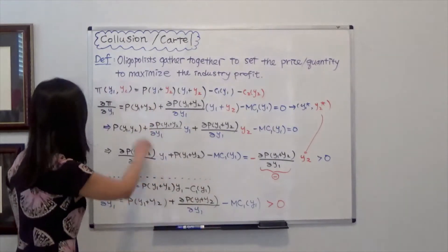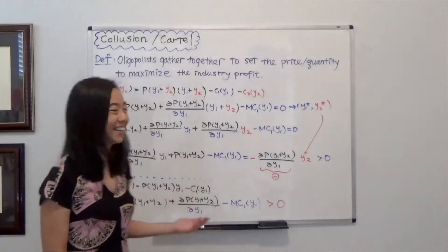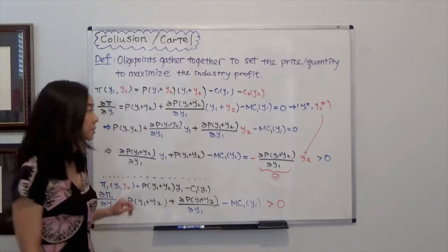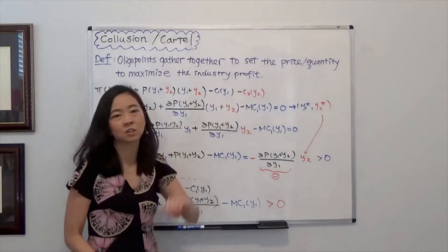Each of them produce quantity Y1 and Y2. So the industry profit is equal to the price, which is a function of Y1 and Y2, times industry quantity minus the cost of firm 1 minus the cost of firm 2.